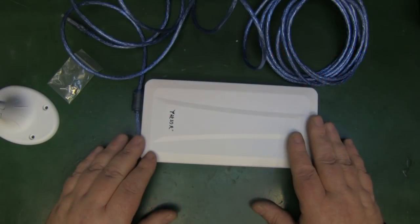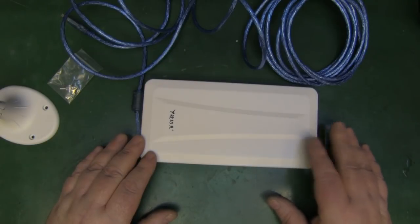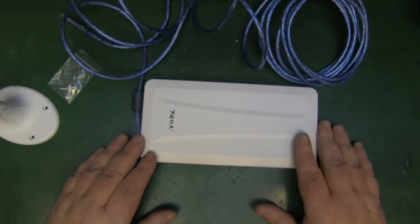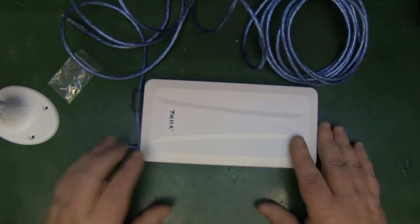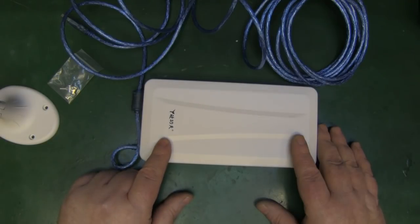So what we've got on the bench to take a look at today is my latest purchase off eBay. It's a 14 dB antenna for Wi-Fi 2.4 gigahertz and it has a Wi-Fi card built into this, so it's a combined antenna and Wi-Fi card.